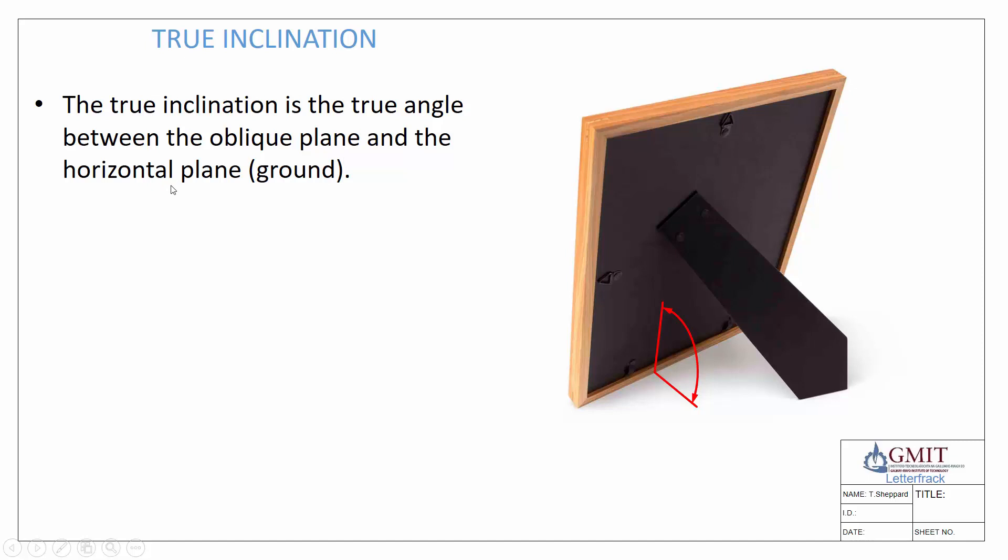When we say inclination generally we're talking about being inclined to the ground. Sometimes it can be inclined to different planes, but generally speaking we're talking about the horizontal plane. We can see the example here of our picture frame. Whatever angle that this is making to the ground, that's our true inclination.